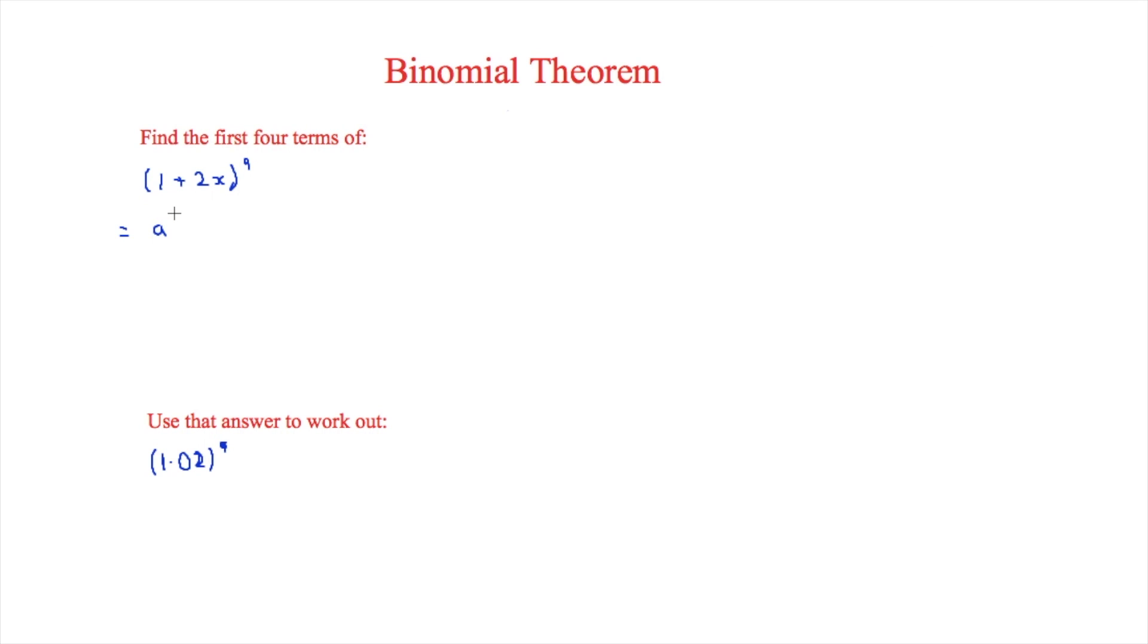Now the first one will be a to the 9. Now this is because this is the first term and there is no b in the first term and because it always starts with 1 it would just be 1 times a to the 9 but obviously you don't need that. But the next one will have a to the 8 and then b. But in order to get the coefficient we're going to have to use that nCr.